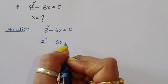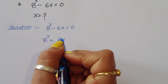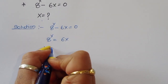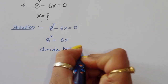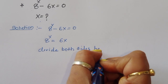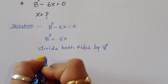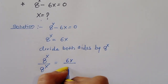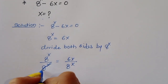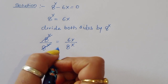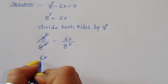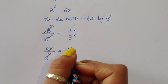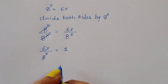Now we can divide both sides by 8 power x, because we have to cancel 8 power x. So 8 power x divided by 8 power x is equal to 6x divided by 8 power x. The 8 power x terms cancel, so we get 6x divided by 8 power x is equal to 1.